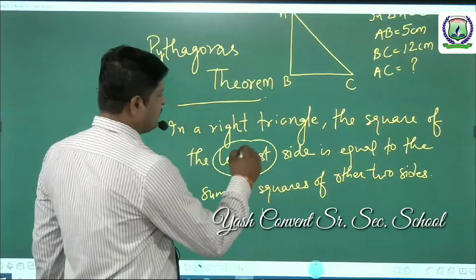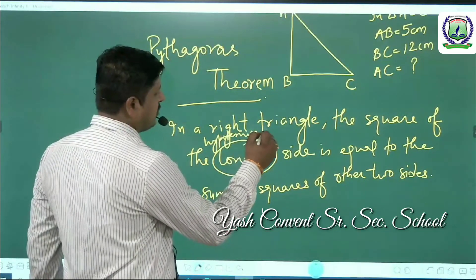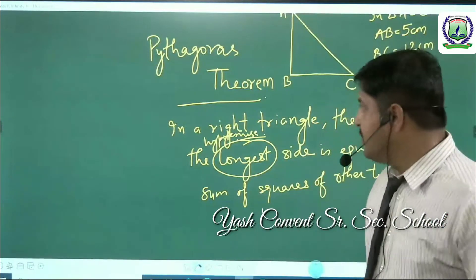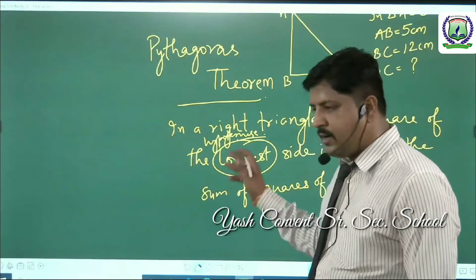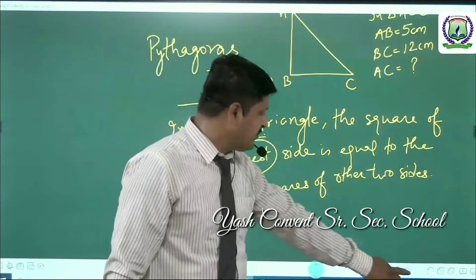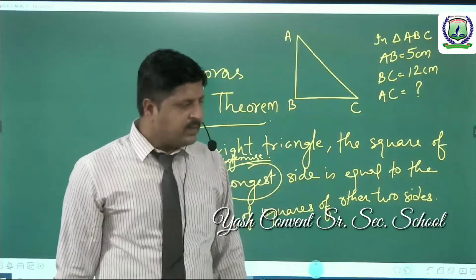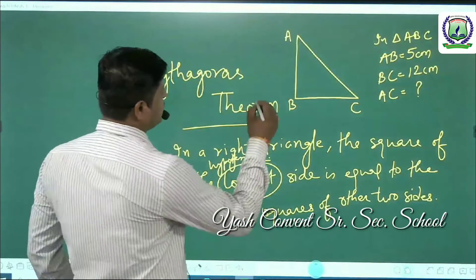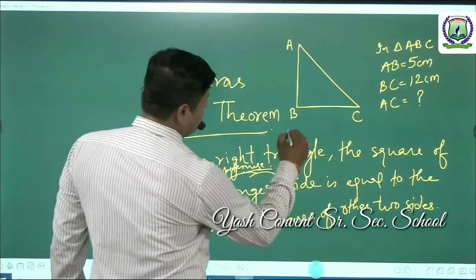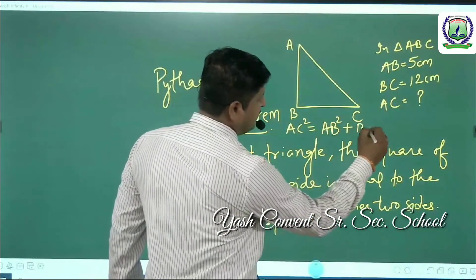What is this longest side? That is the hypotenuse. In a right-angled triangle, the longest side is always the hypotenuse. That means the square of the hypotenuse is always equal to the sum of the squares of the other two sides. Here in triangle ABC, AC is the hypotenuse, and AB and BC are the other two sides. So by applying Pythagoras theorem: AC² = AB² + BC².